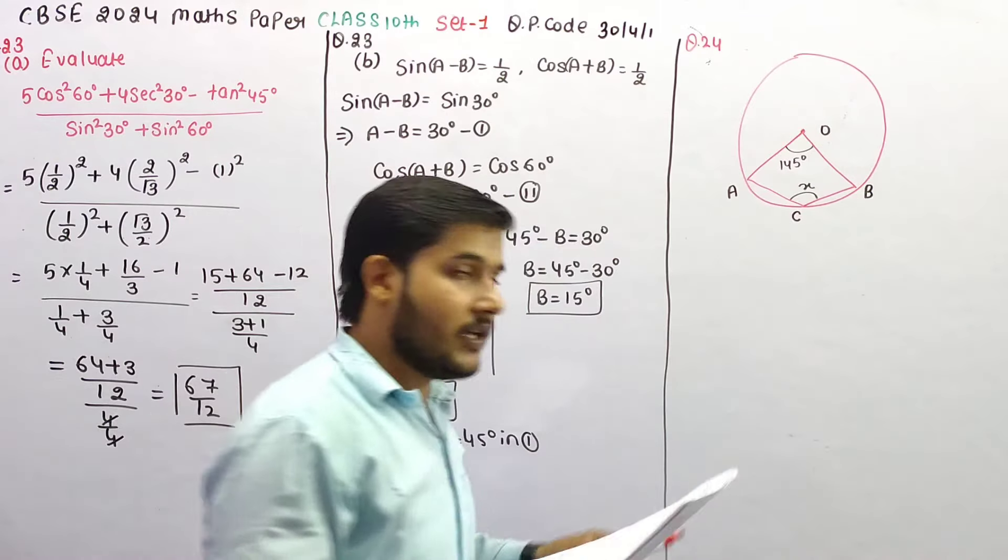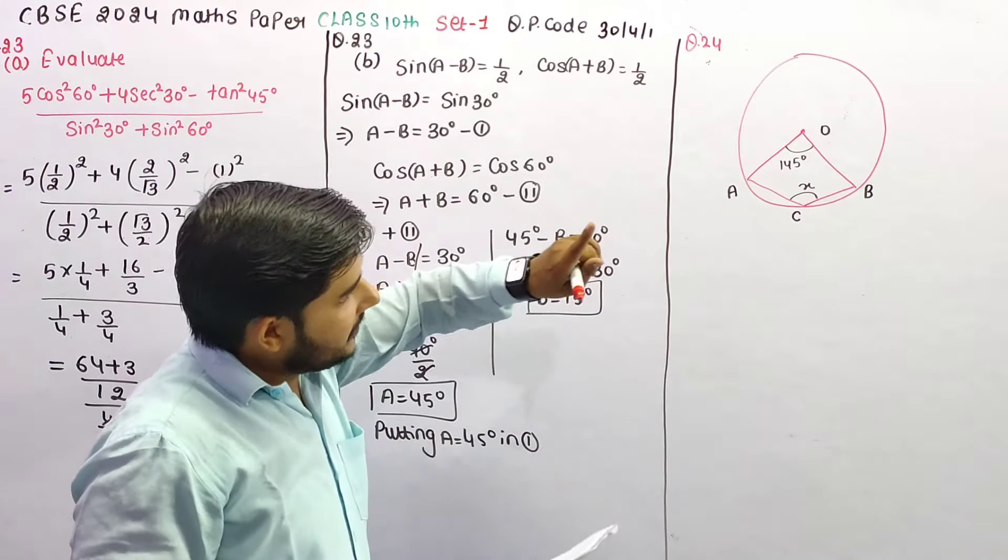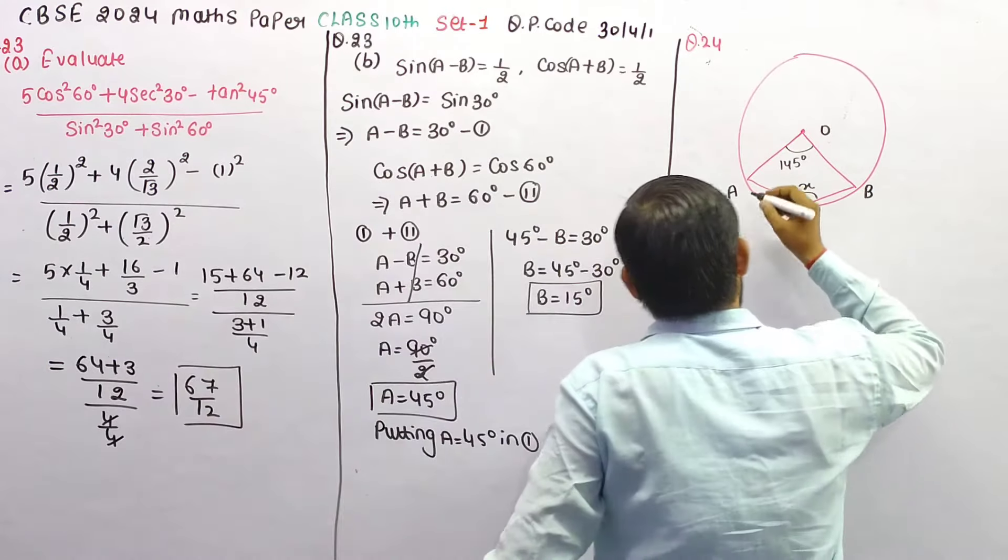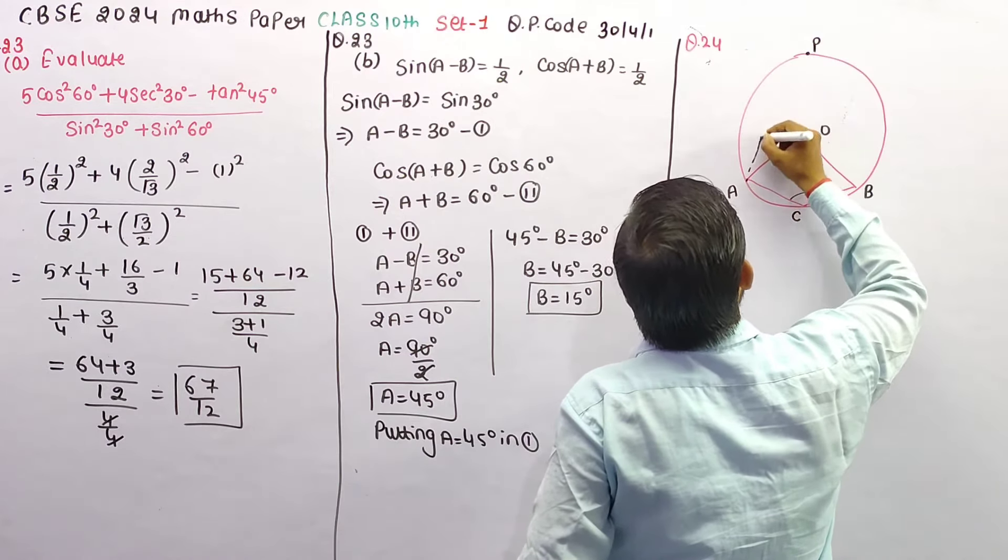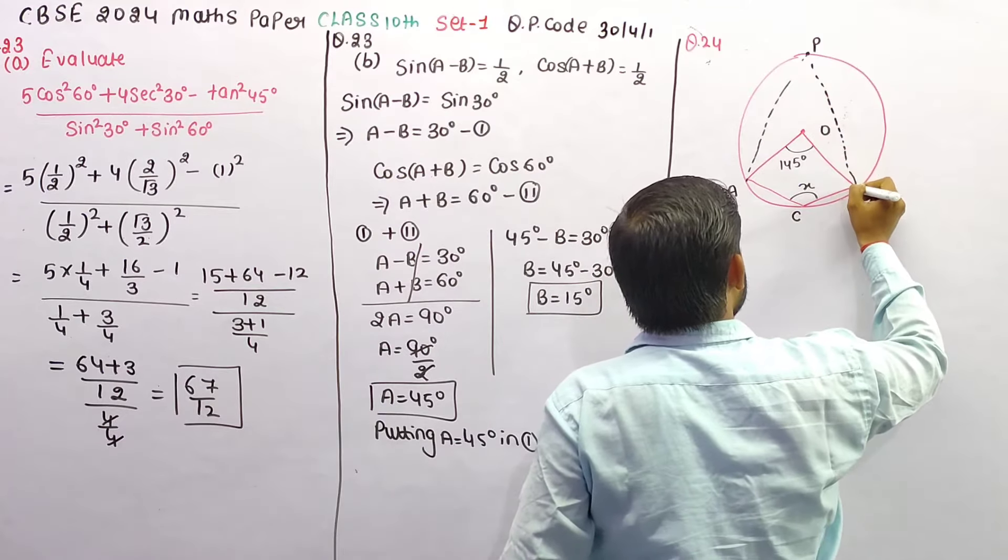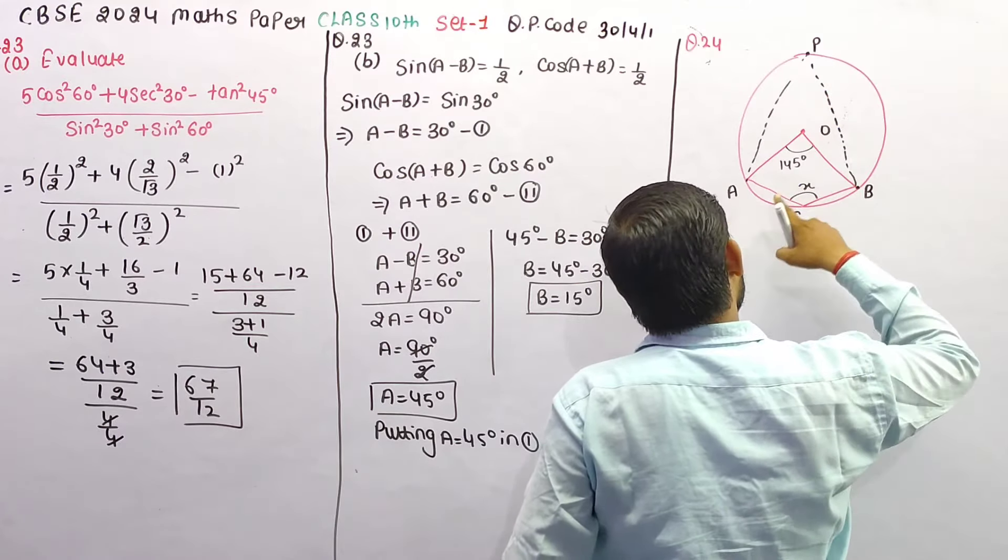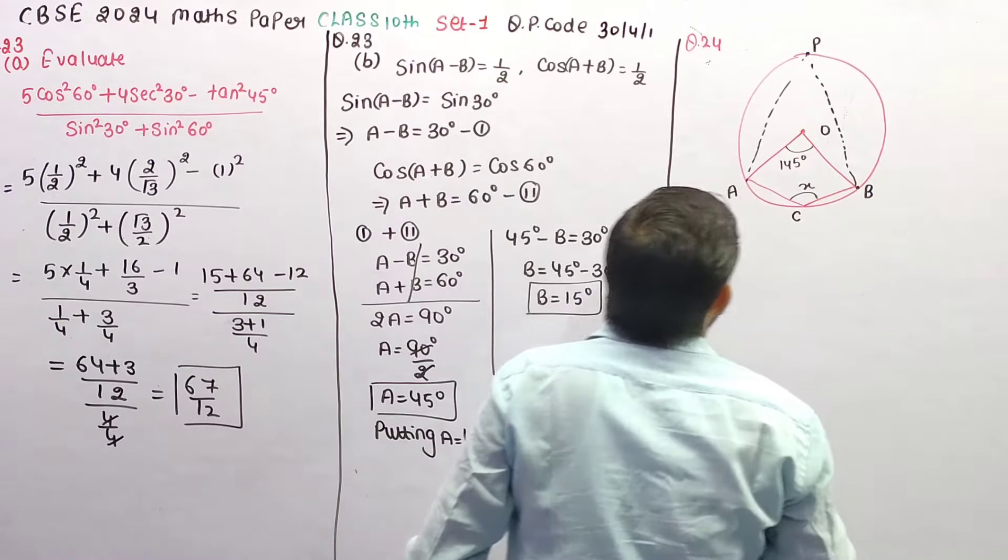Now, we have to find the value of X. Here we have a point, P, and join A, B. So A, P, B, C is a cyclic quadrilateral.